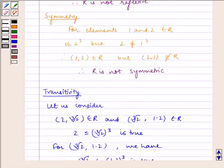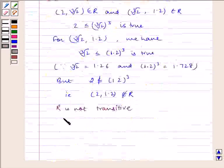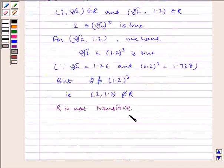So we have proved that R is not reflexive, R is not symmetric, and finally R is not transitive. I hope you understood the session. Bye and have a nice day.